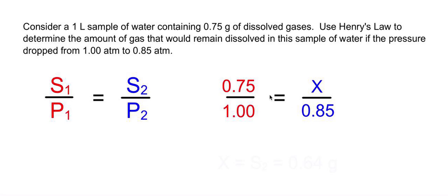You cross multiply and do your math. When you solve for X, which is the solubility of the new solution, you get 0.64 grams dissolved when the pressure has dropped. So it went from 0.75 down to 0.64 grams.